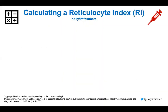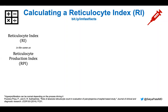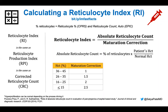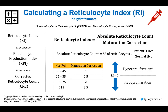Let's put this all together. Your retic index is the same as your retic production index, which is the same as your corrected reticulocyte count. Your reticulocyte index is your absolute retic count divided by your maturation correction. Your absolute retic count is your percentage of reticulocytes times your patient's hematocrit divided by normal hematocrit. In CPRS use the reticulocyte percentage; in EPIC use reticulocyte count auto. The maturation correction depends on the hematocrit percentage. RI of two is your cutoff: greater than two indicates hyperproliferation, which can be normal, and less than two indicates hypoproliferation.